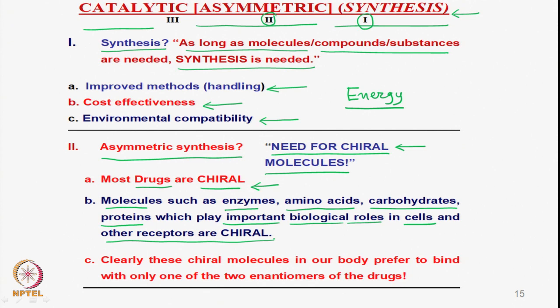Such chiral molecules which play biological roles prefer to bind with only one of the two enantiomers of the drug. Therefore, it is very important that these molecules have to be synthesized in optically pure form, with as high optical purity as possible. When one looks at the history of asymmetric synthesis, one of the first things that comes to mind is thalidomide.